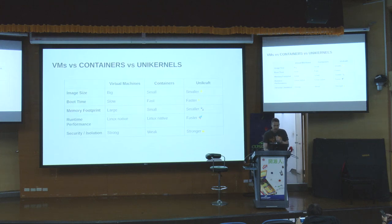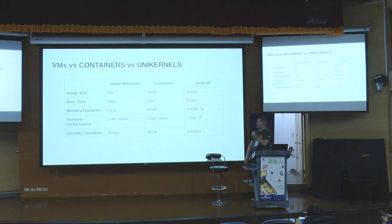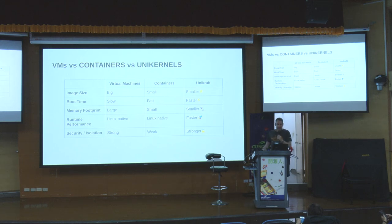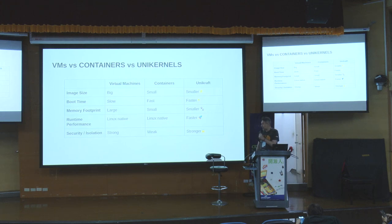We see that as the evolution, and we would like to see unikernels as the deployment unit in the cloud that could perhaps replace containers. The good thing is that we combine the good parts of both previous approaches — we end up with smaller images, much faster boot times, a tiny memory footprint, very fast runtime performance, and much stronger isolation.